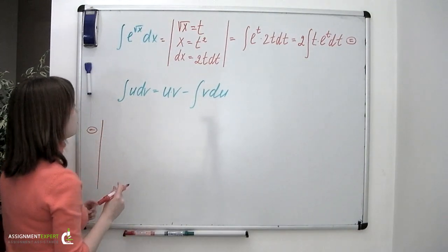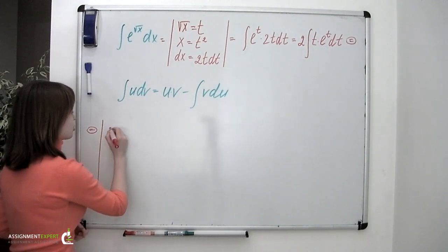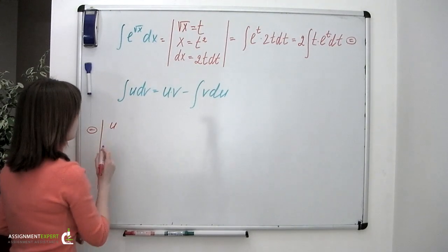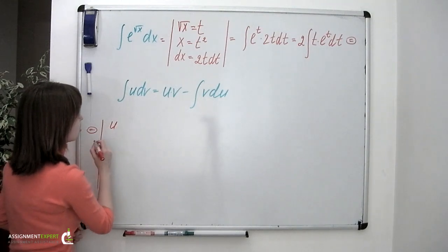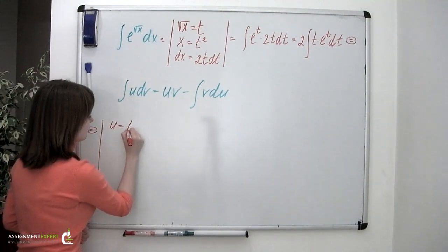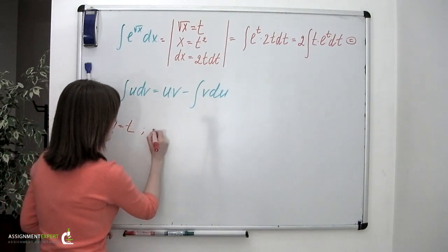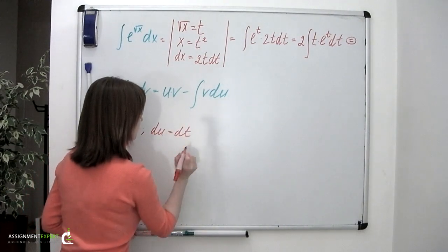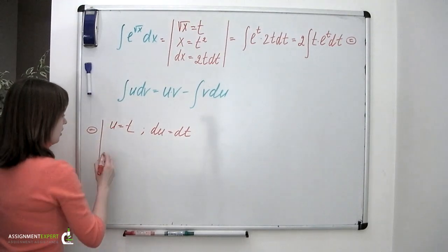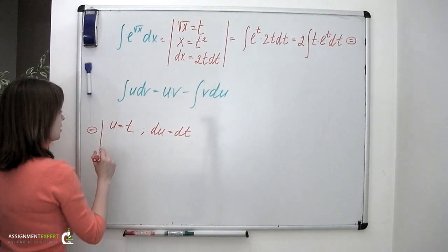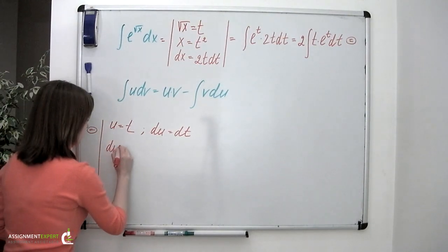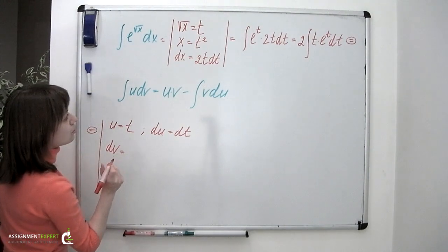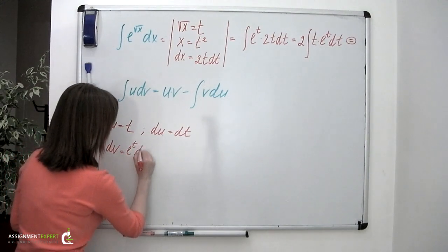First we're going to need to pick these u and v functions. I suggest that we choose u to be equal to t, which means that du equals dt. And this leaves us with dv equal to e to the t dt.